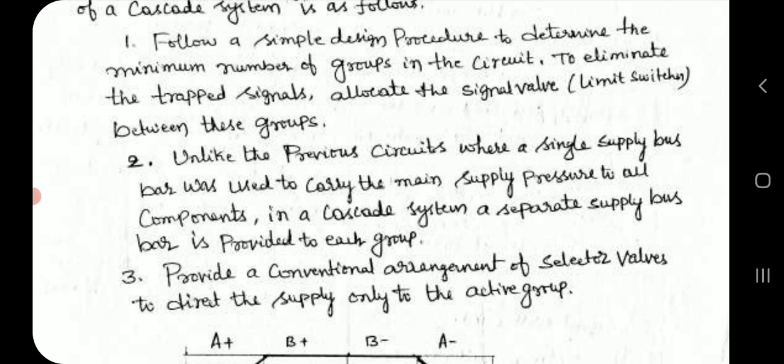Second, unlike the previous circuits where a single supply bus bar was used to carry the main supply pressure to all components, in a cascade system a separate supply bus bar is provided to each group. Third, provide a conventional arrangement of selector valves to direct the supply only to the active group.